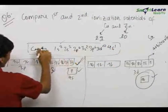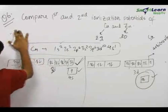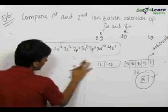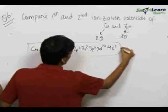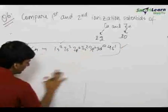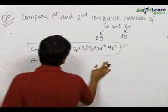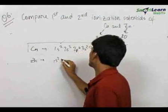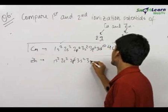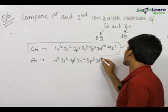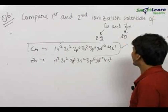Always remember this change happens in the case of copper and chromium. We now know the electronic configuration of copper, and we must use this configuration for all questions in the future. The electronic configuration of zinc will be 1s2, 2s2, 2p6, 3s2, 3p6, 3d10, and 4s2, because zinc has one electron extra compared to copper.